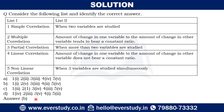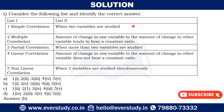The correct answer is B. Simple correlation: when the study involves two variables, it is called simple correlation. Multiple correlation: when three variables are studied simultaneously. Partial correlation: when more than two variables are studied but only two variables are analyzed at a time, keeping the others constant — that is known as partial correlation.